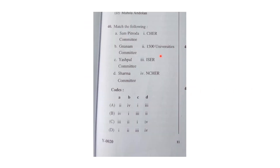The last question was about different committees and their recommendations. The Yashpal Committee recommended the National Council for Higher Education and Research — that is option B paired with four. The Espail Committee recommended the Council of Higher Education Research, so C should be paired with one. The only option that matches this pairing is option A, which is the correct answer.